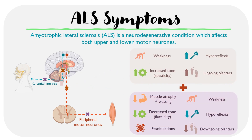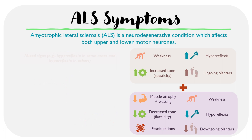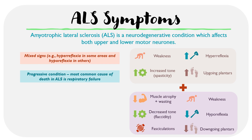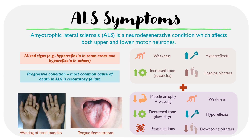ALS would present with both upper and lower motor neuron signs, resulting in mixed presentations depending on the patient. For example, there might be hyperreflexia in some areas where upper motor neurons are affected more, and hyporeflexia in others where lower motor neurons are predominantly affected. Importantly, ALS is a progressive condition and the most common cause of death is respiratory failure as the respiratory muscles lose their function over time. For exam purposes, common presentation prompts include wasting of the hand muscles and tongue fasciculations.